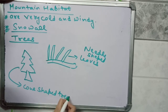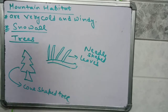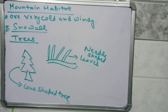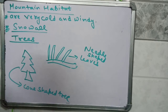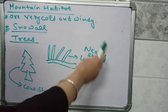Various trees found in mountain and hilly areas have a cone-type shape, and many trees have needle-shaped leaves. So how does the needle shape of a leaf or the cone shape of a tree help these plants in their survival?